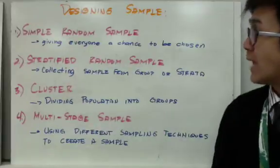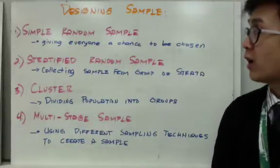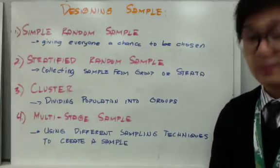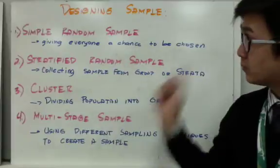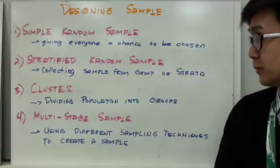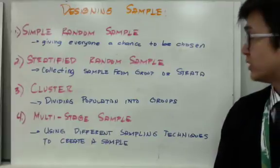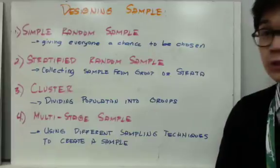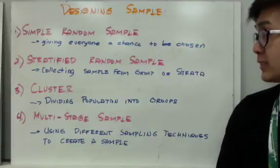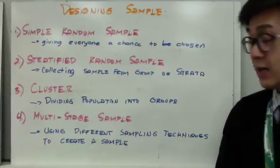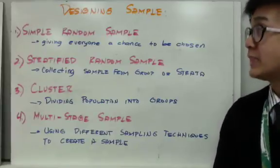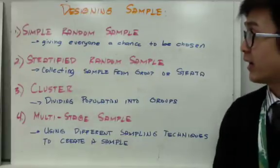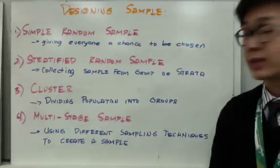The first sampling technique is simple random sampling, which means giving everyone a chance to be chosen in the sample. The second is stratified random sampling, which means collecting samples from groups or strata. The third is cluster sampling, which involves dividing the population into groups to find your sample. And multi-stage sampling uses different sampling techniques combined to create a sample.